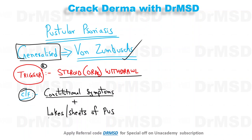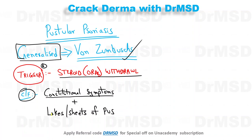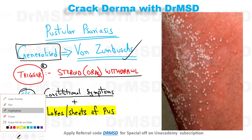Along with constitutional symptoms, the most characteristic cutaneous manifestation is the development of lakes or sheets of pus over an erythematous base. These pustules develop in a wavy fashion — one after the other — spreading all over the body. The skin can be completely denuded, which is the classical picture of pustular psoriasis.